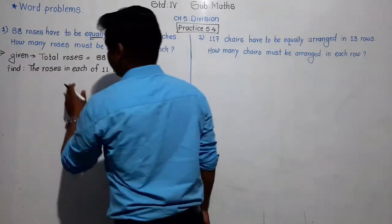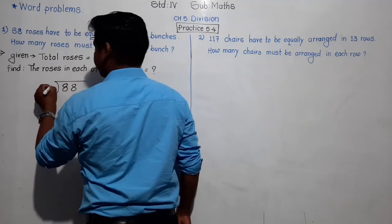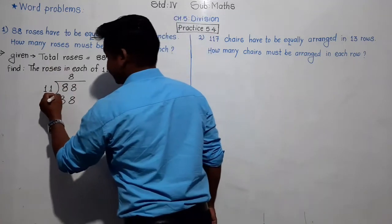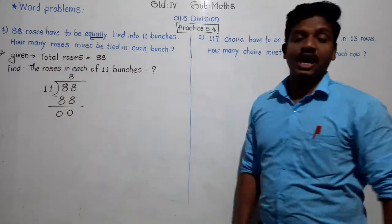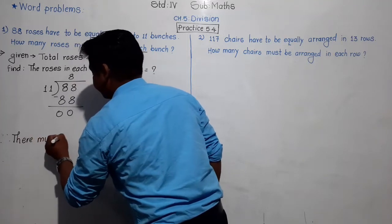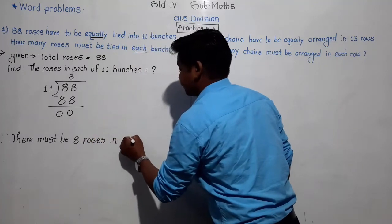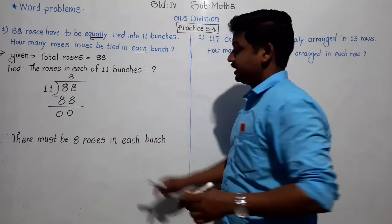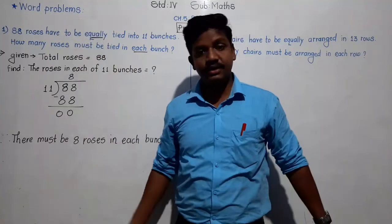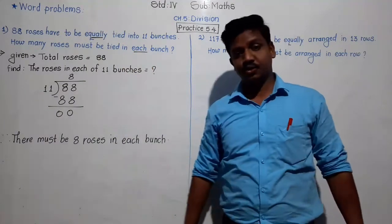So we have to divide 88 flowers into 11 groups. You know 11 eights are 88. So when we divide 88 by 11, that gives us 8, with 88 minus 88 equaling 0. So in each bunch, how many roses must be there? There must be 8 roses in each bunch. Likewise, 11 bunches with 8 each gives 8 into 11 equals 88. You can verify by the reverse operation: 8 into 11 is 88, that is 88 divided by 11 equals 8.